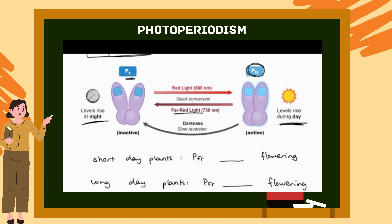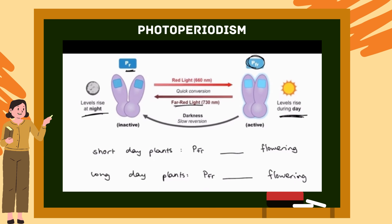Phytochromes exist in two forms: the inactive form Pr, which is converted into the active form Pfr when it absorbs red light; and the active form Pfr, which is broken down back into Pr when it absorbs far-red light. The active form also gradually reverts to the inactive form in darkness — called darkness reversion. Since sunlight contains more red light, Pfr is predominant during the day and Pr during the night. Only the active form Pfr is capable of causing flowering. In short day plants, Pfr inhibits flowering, requiring low levels of Pfr from long nights. In long day plants, Pfr activates flowering, requiring high levels of Pfr from short nights.